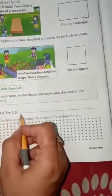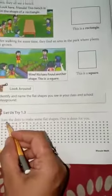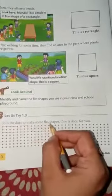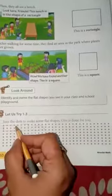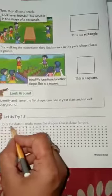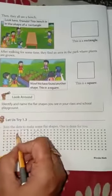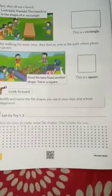Let us try one point three. Join the dots to make some flat shapes. One is done for you. Yeh dekhi, aap ke liye, yahan pe ek rectangle in dots se banaya hua hai. Same, aap aise hi square, triangle is mein bana sakte ho. Aur bhi shapes, aap is mein draw kar sakte ho.